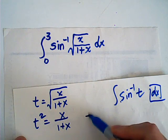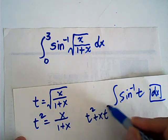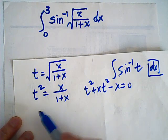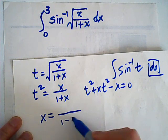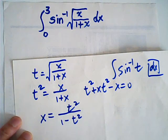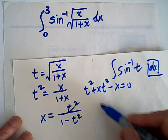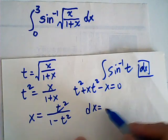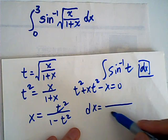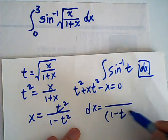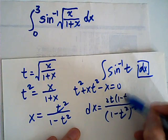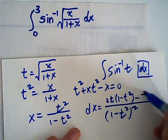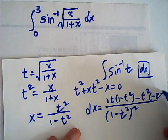Then you have x·t² plus x·t² minus x equals 0. We try to get x, so x is equal to t² over 1 minus t². Then dx — wow, this is a rather complicated quotient rule. Then this is 2t minus t² times negative 2t, all over t² squared, dt.